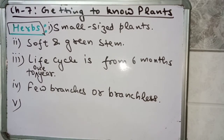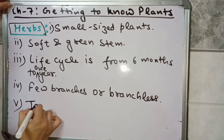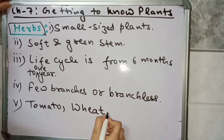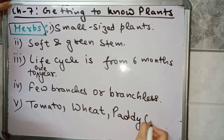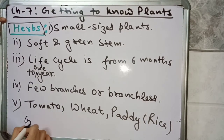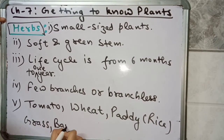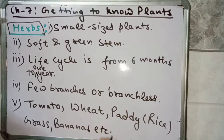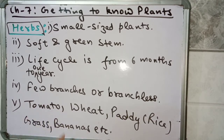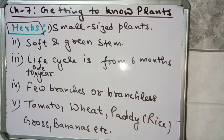The examples of herb plants are tomato, wheat, paddy which is also known as rice, grass, bananas, etc. So tomato is a herb plant because it is a small sized plant, it has a soft and green stem, its life cycle is from 6 months to 1 year, and there are very few branches or some are branchless also.